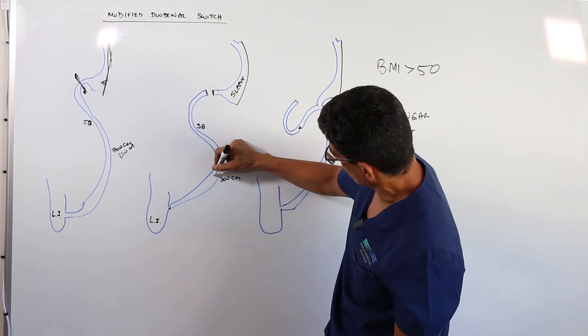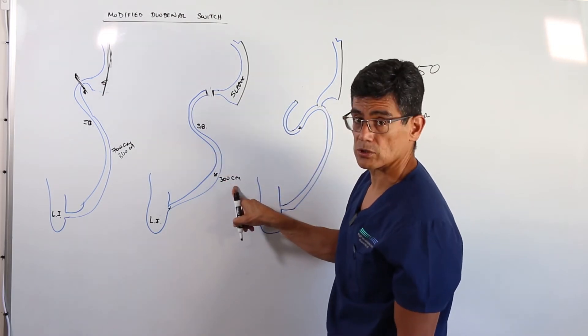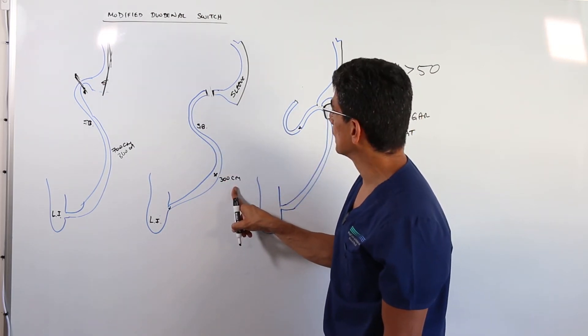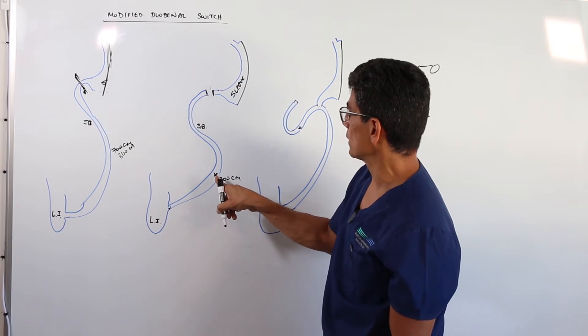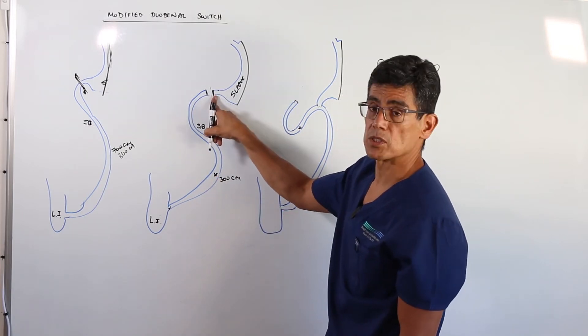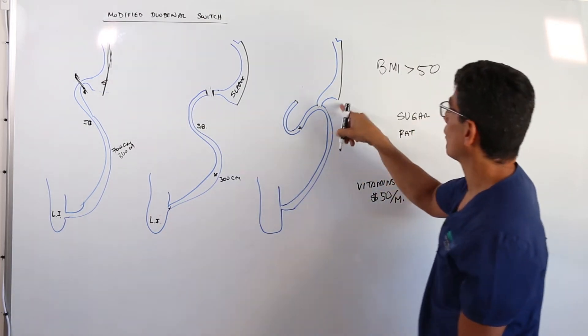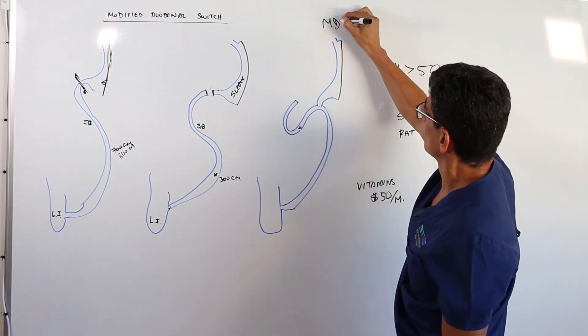And I'm going to go backwards and mark 300 centimeters. I'm going to measure 300 centimeters. And the next step will be connecting this 300 centimeter mark to this piece of small bowel. And we will have our modified duodenal switch.